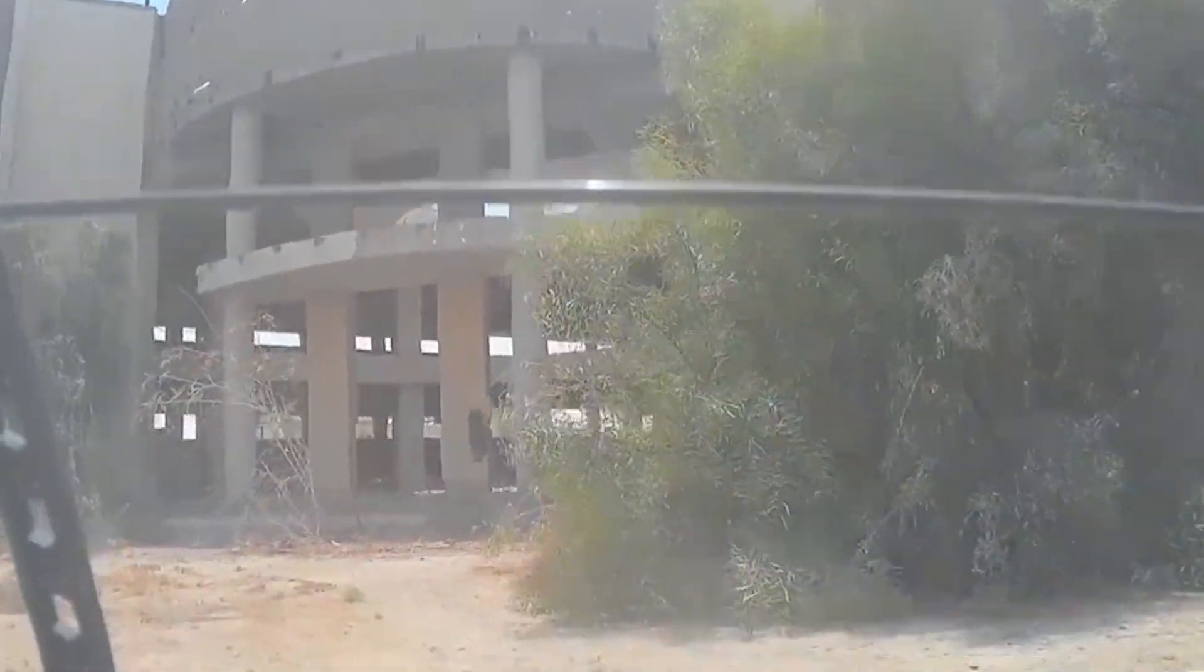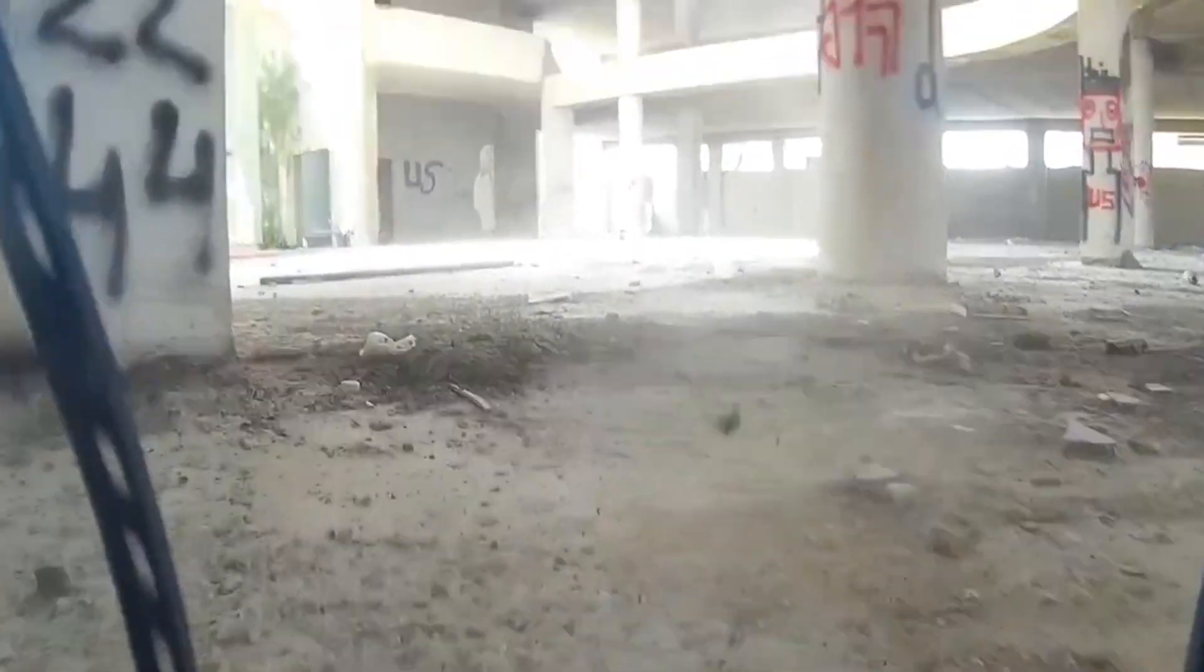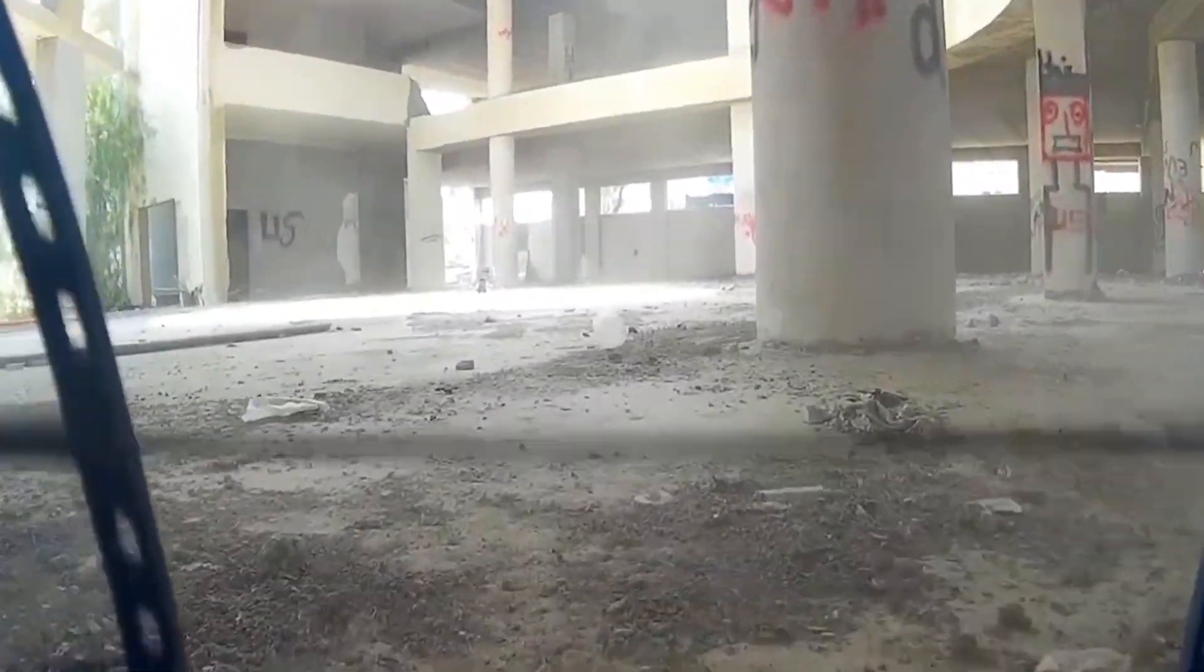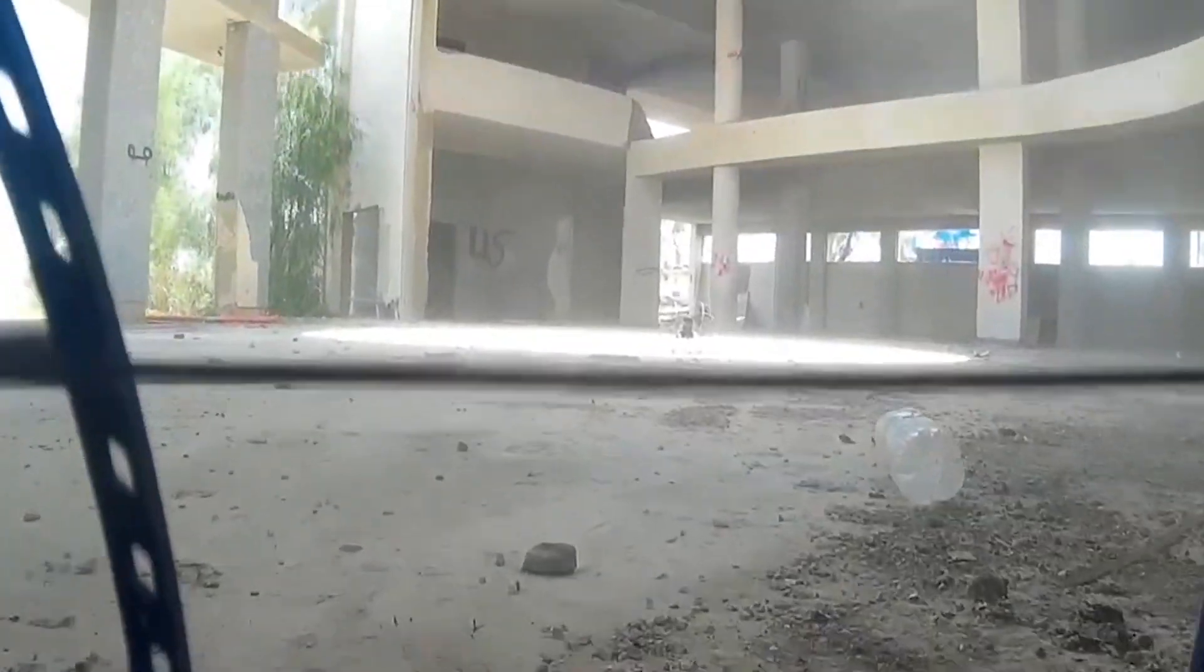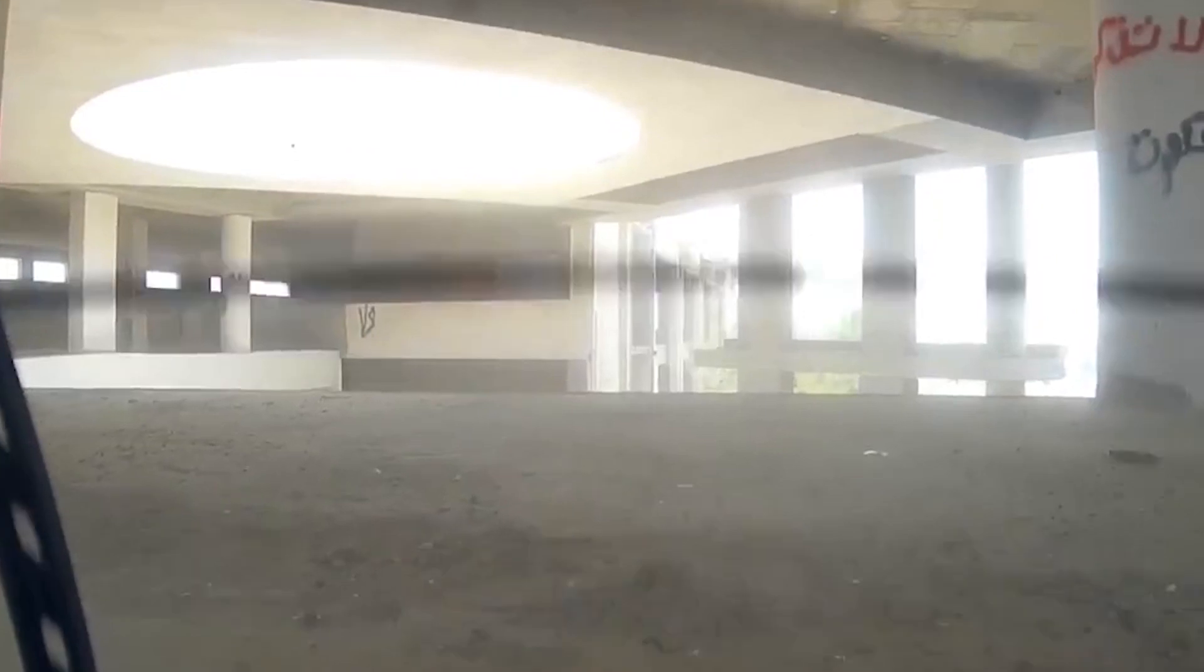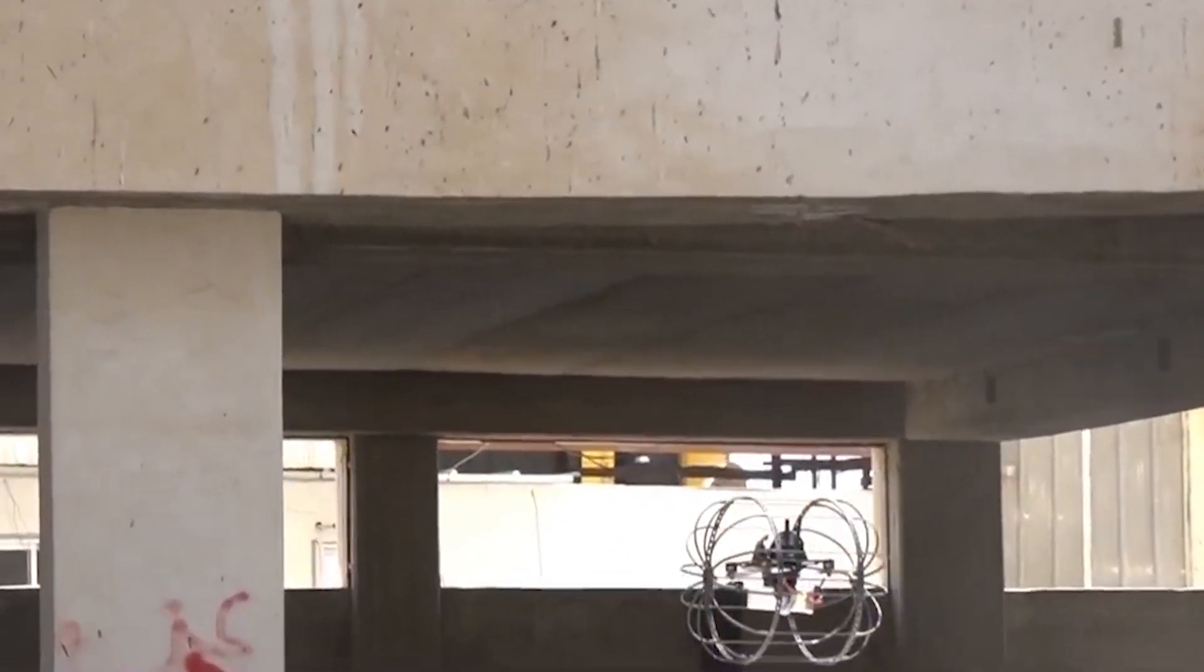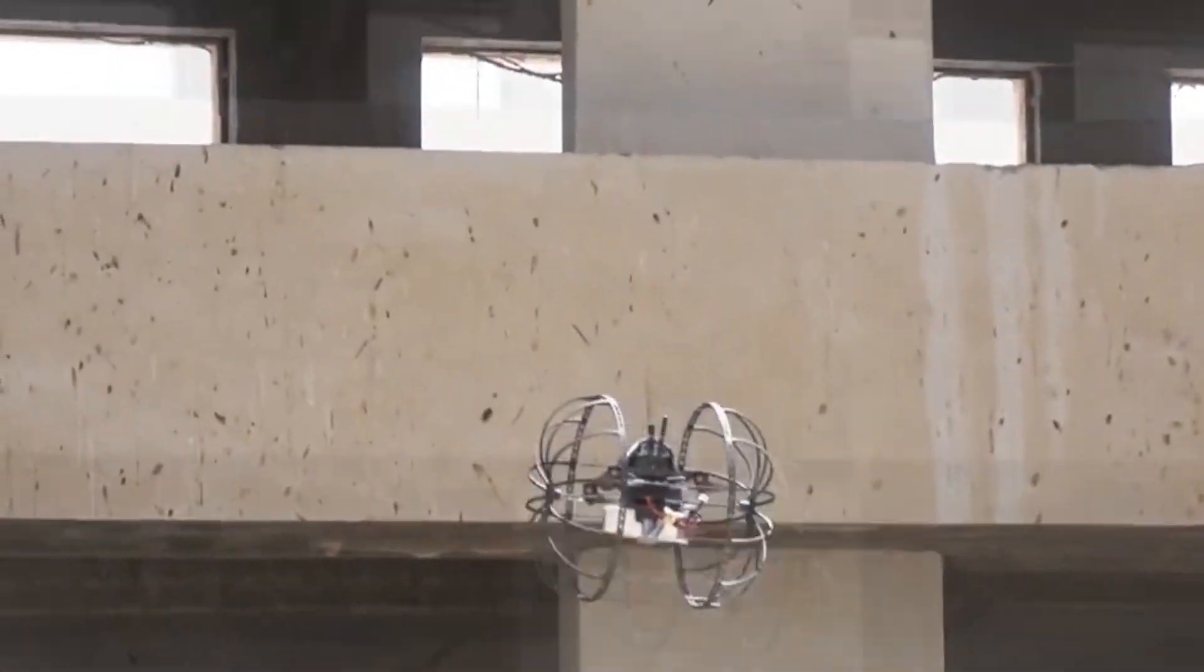Rooster is tough. It rolls inside a 30x40 cage and can crash from 6 meters high and keep on working. A team of roosters can communicate with one another, even if there's no cellular connection available, by creating a wireless mesh network, kind of like a robotic walkie talkie.